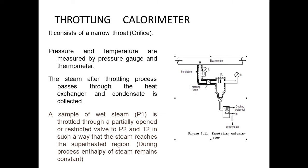Let us see the throttling calorimeter. The throttling calorimeter uses the process of throttling. Throttling is the process by which we reduce the pressure by passing high pressure gases through a restricted area. We pass fluid through the restricted area so that the pressure is reduced on the other side — that is called the throttling process.